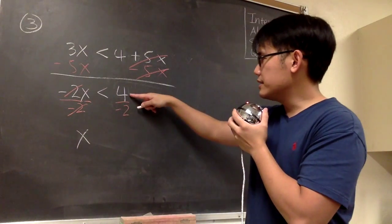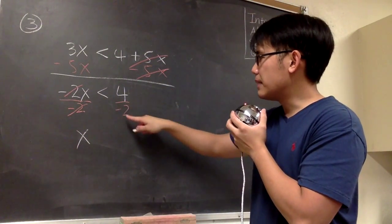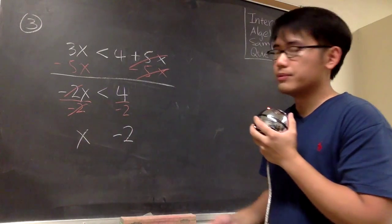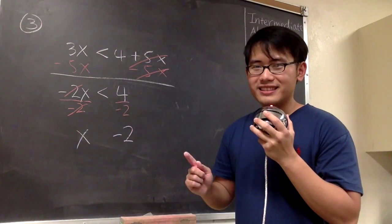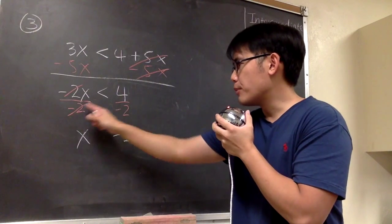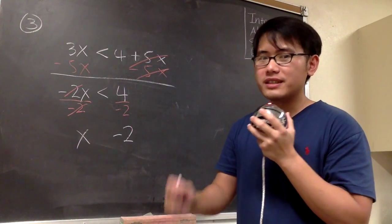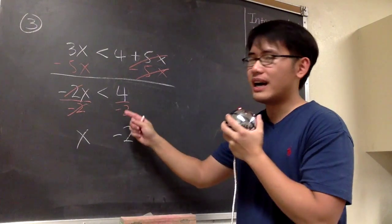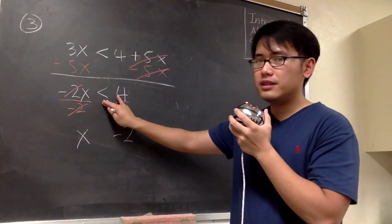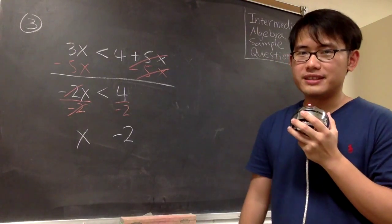Now, let's work this out. 4 divided by negative 2 will give us negative 2. But the crazy thing is this: whenever we divide both sides or multiply both sides by a negative number in an inequality, we will have to switch the inequality symbol.